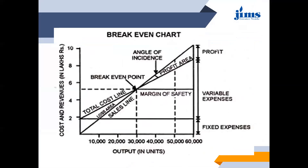In the previous lecture, we have already discussed about the break-even point or break-even stage. Showing the break-even in graphical form is the break-even chart. Here on the x-axis, output is taken, and on the y-axis, cost as well as revenues are taken. The company can put their output units on the x-axis and whatever the cost and revenues are — in thousands, hundreds, crores, lakhs — that can be shown on the y-axis.